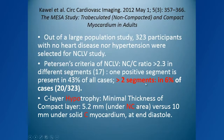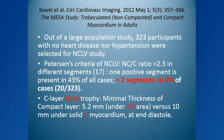Peterson criteria — a name that will recur in many slides — identify non-compaction by a ratio between the compact and non-compact myocardium. If the non-compact thickness is more than 2.3 times the normal compact myocardium, we call the condition non-compaction. As a secondary feature, they discovered — and this is a main point of our discussion — that when there is non-compaction, the compact myocardium underlying it is thinner than normal.